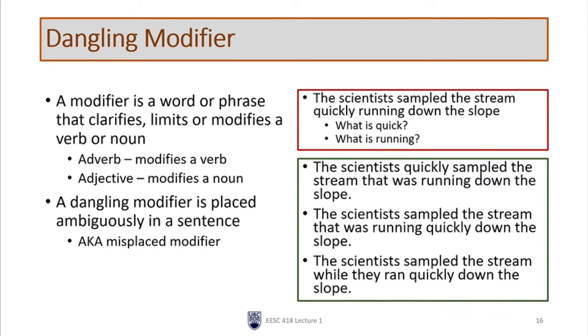If I say this to you in everyday language, you probably would assume that it is the stream quickly running down the slope. But in technical writing we need to be explicit. So who's quick or what is quick, and who is running or what is running?